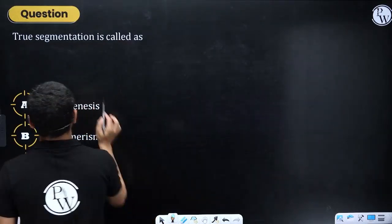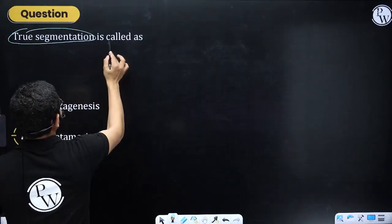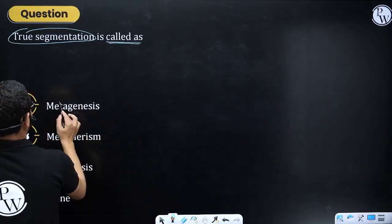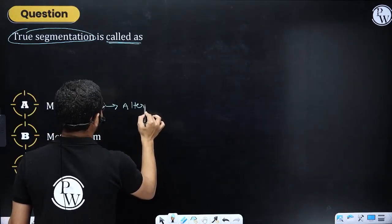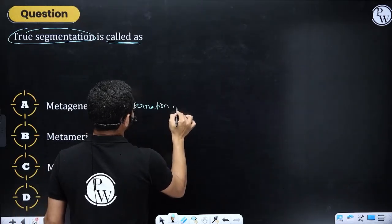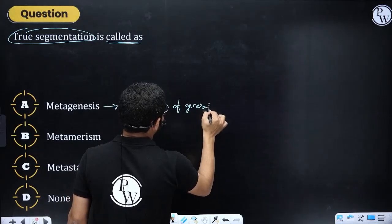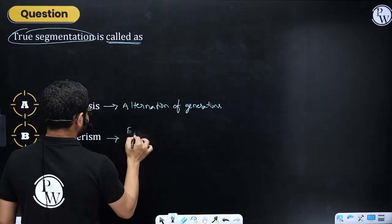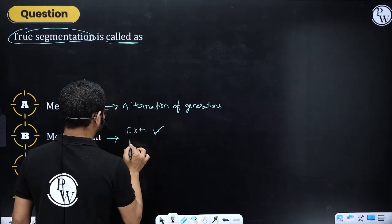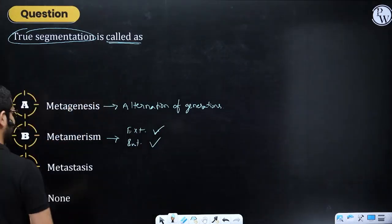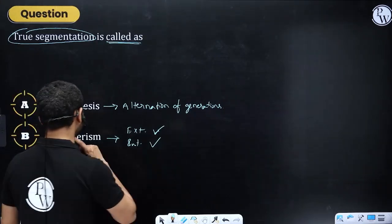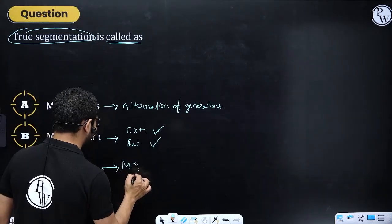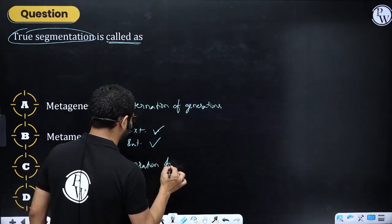First question: True segmentation of the body is called what? For example, metagenesis is alternation of generations. True segmentation is called metamerism. External segmentation as well as internal segmentation is called metamerism.